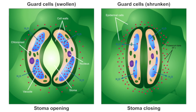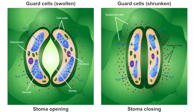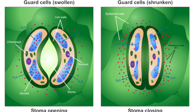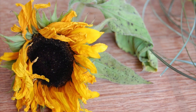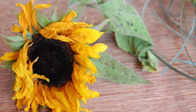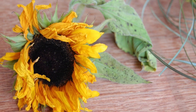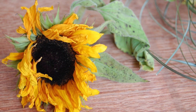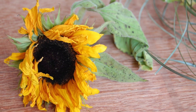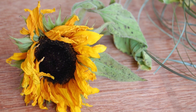When plants lose more water than the roots can replace, the whole plant may wilt. This means that the surface area is greatly reduced so that less exchange can take place.